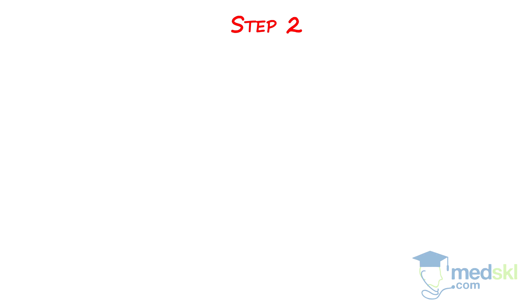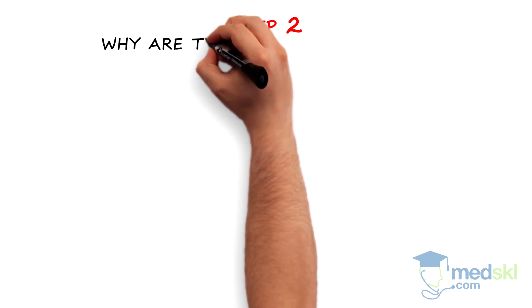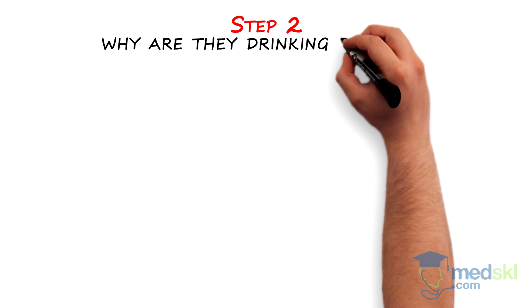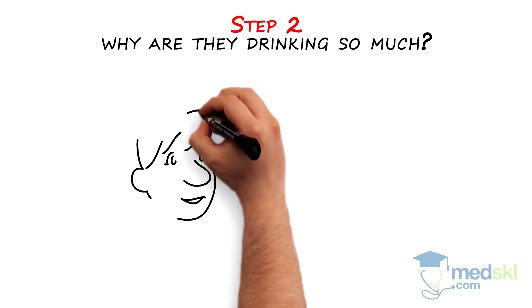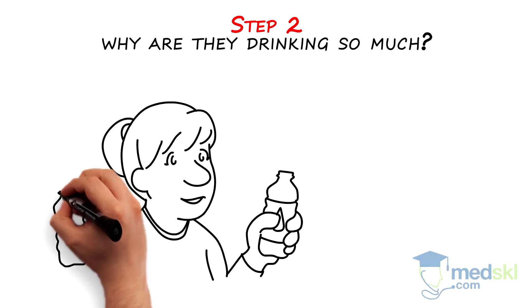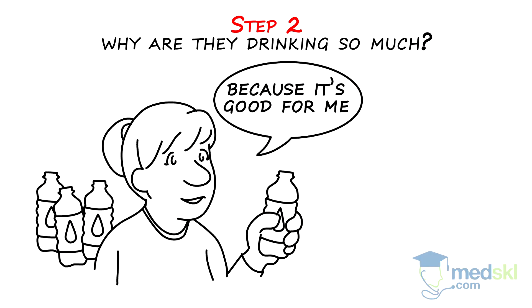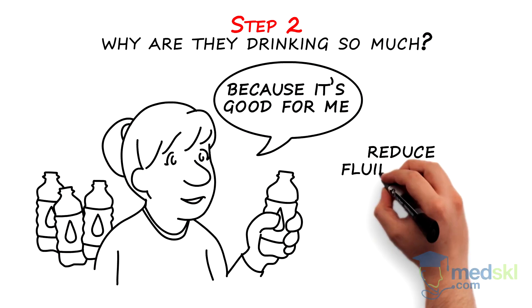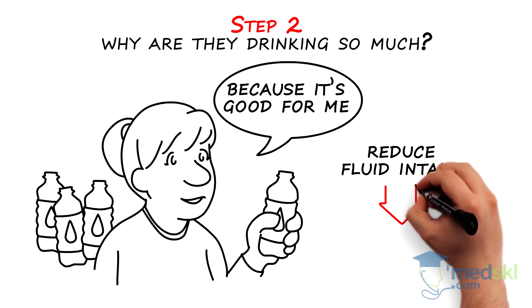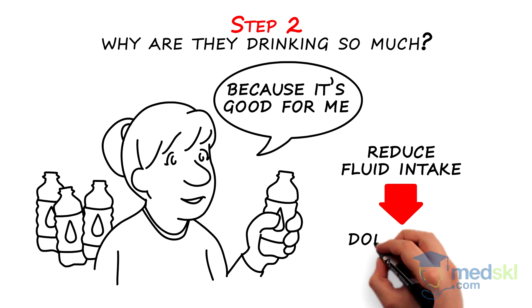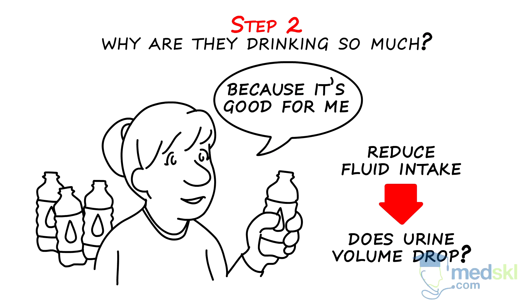Step 2: Next, find out why they are drinking so much. If they say because it's good for me, then tell them to reduce their fluid intake and see if the urine volume drops.